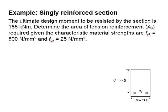Let us try an example to determine the amount of reinforcement bar required in a reinforced concrete section. The ultimate design moment is given as 180 kilonewton meters. The strength of the steel bar and the concrete are given as 500 N/mm² and 25 N/mm² respectively.